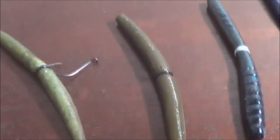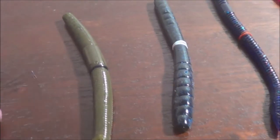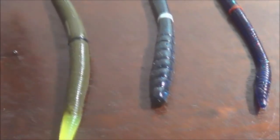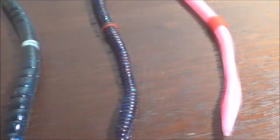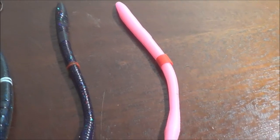Now I want to explain some of these other ones. There's just different baits you can use. This is a Berkley General, a Yum Dinger, a Missile Baits 48, and a couple Zoom Trick Worms. Now you notice, I do have different colors on some of these.